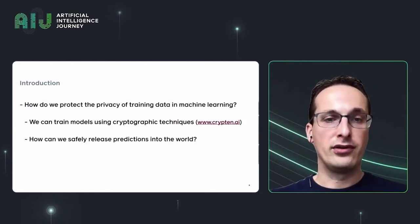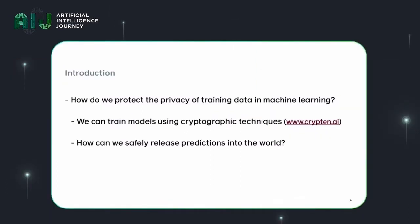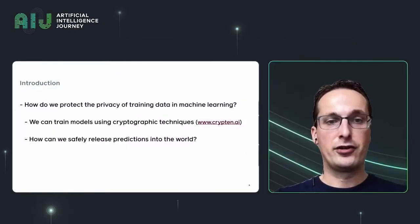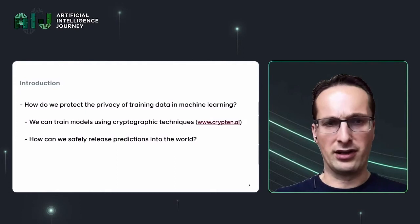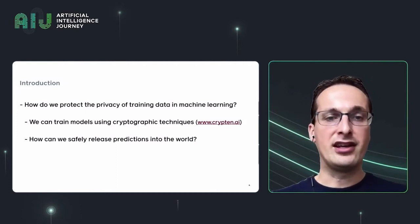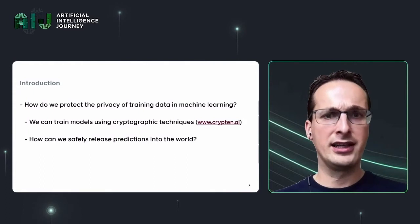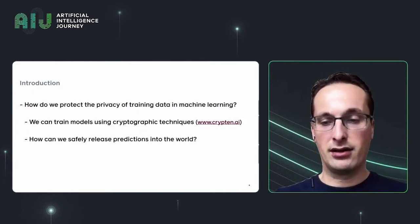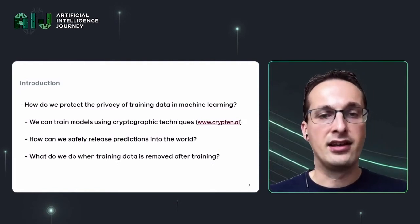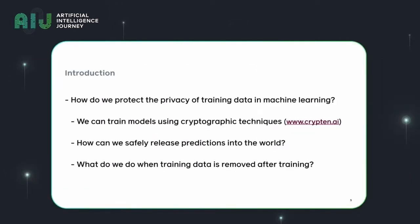Namely, even if you train a model using cryptographic techniques, after you've trained the model you're going to use it to make predictions and release those predictions into the world. There may be information leaking about the private training data through those predictions. So the first problem is how can we safely release predictions in a private way — limiting information leakage about private training data. The second problem is what do we do when training data is removed after we train our model — can we update our model to remove that data from the model as well? Those are the two questions I will focus on in this talk.